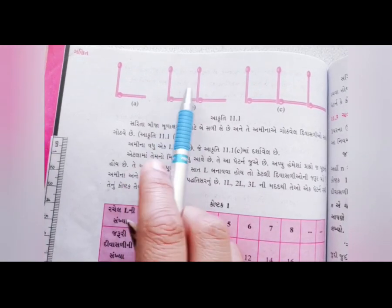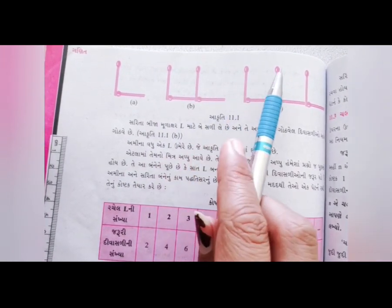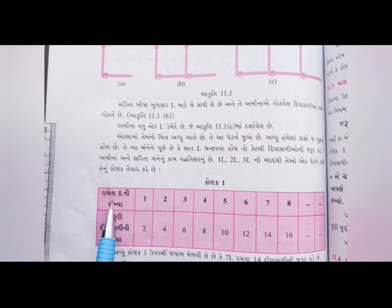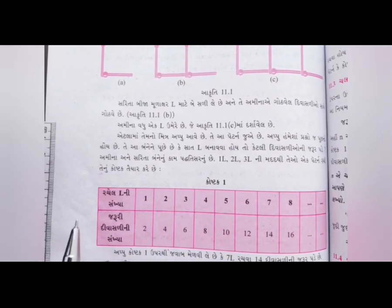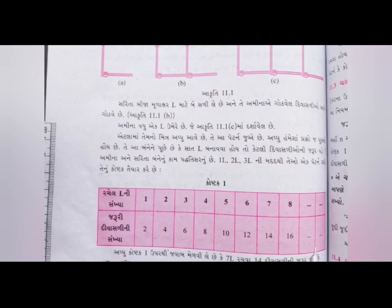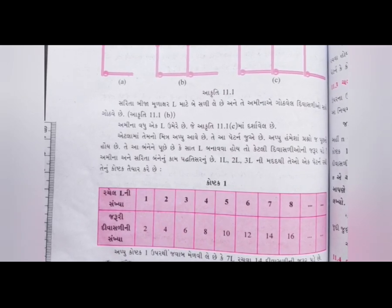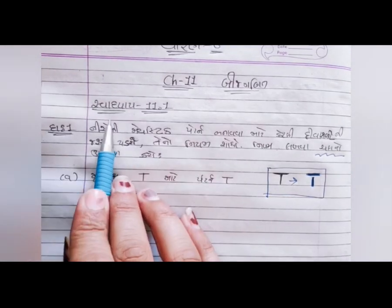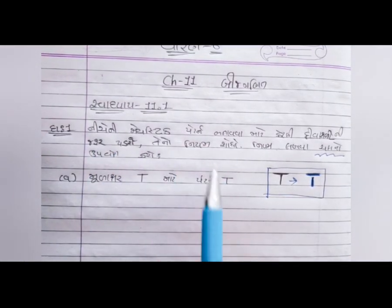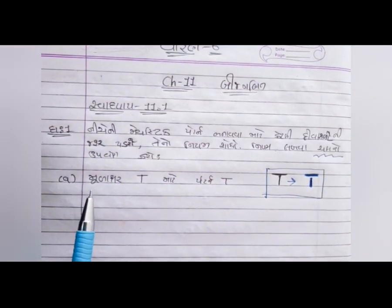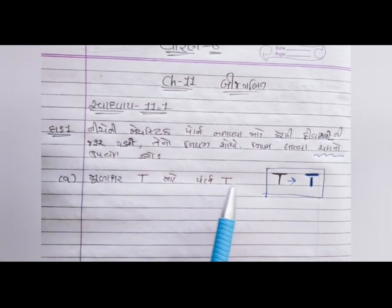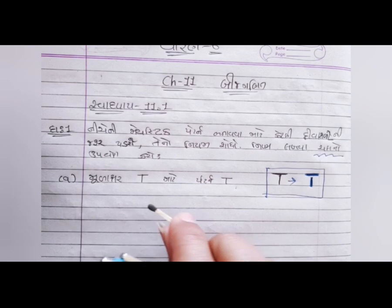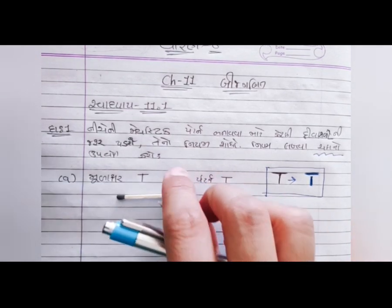જ્યારે 1L બનાવો ત્યારે 2 દીવાસળીની જરૂર પડી. 2L બનાવો ત્યારે 4 દીવાસળીની જરૂર પડી. 3L બનાવો ત્યારે 6 દીવાસળીની જરૂર પડી.